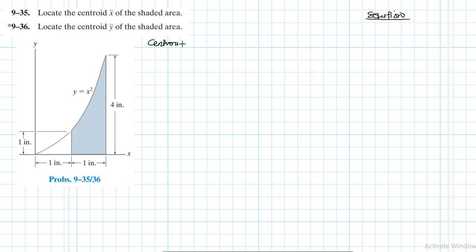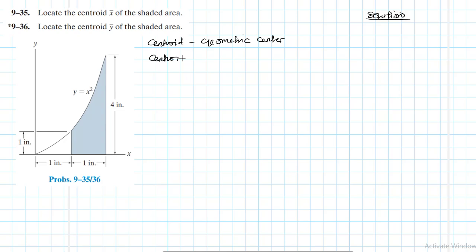What is a centroid? A centroid is basically the geometric center. You can have a centroid of a line, a centroid of an area — as in this case — and a centroid of a volume. The centroid of a line is the geometric center of the line, the centroid of an area is the geometric center of an area, and the centroid of a volume is the geometric center of the volume.